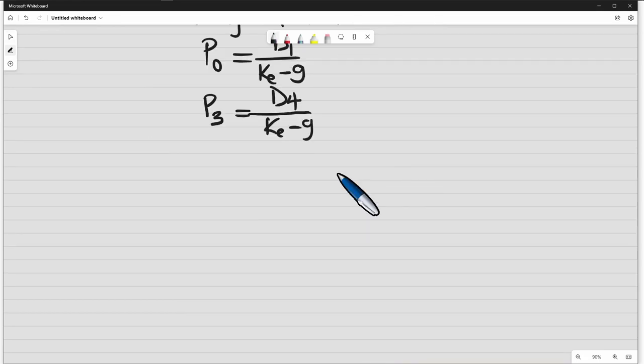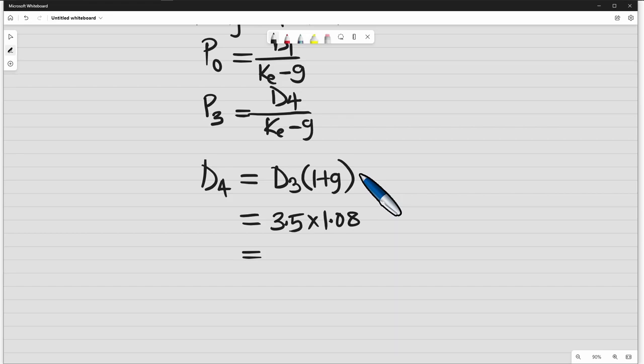Our D4 is, we take the dividend at year 3 and we increment it using the growth rate. So the dividend at year 3 is 3 Naira 50 kobo times 1.08. So we have 3.78. So the P3 will be 3.78, that is our D4, divided by the Ke, which is 0.18 minus the g, which is 0.08. So if we divide it, we will have 37 Naira 80 kobo.